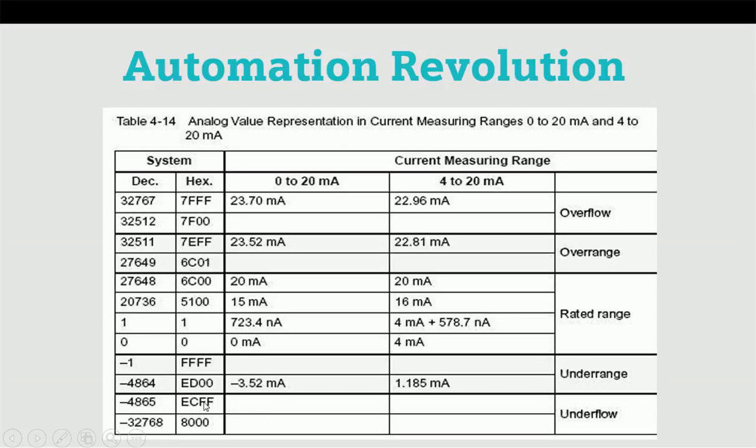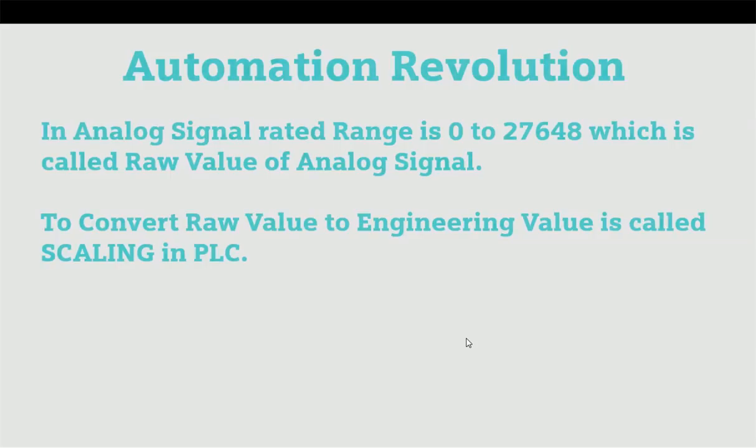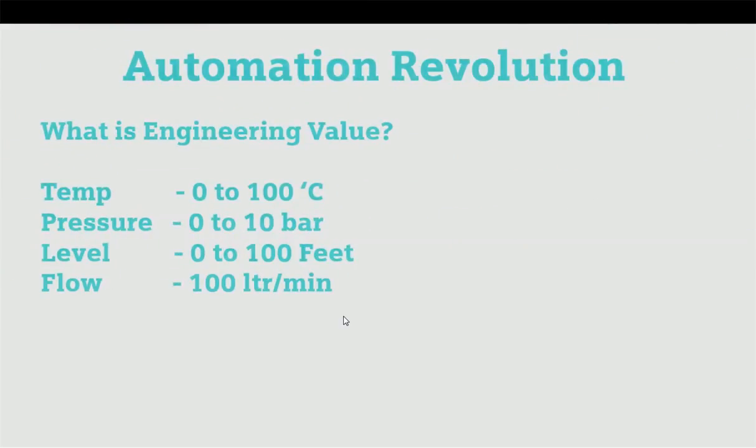What is engineering value? It's a unit range that any technical person or engineer is able to understand. If we are talking about temperature, we understand 0 to 100 degrees Celsius or 0 to 1000 degrees Celsius. For pressure it will be 0 to 10 bar, for level 0 to 100 feet, for flow 100 liters per minute. We understand this engineering value, not decimal or binary language. So we are converting this raw value into engineering value. This is what we call scaling.